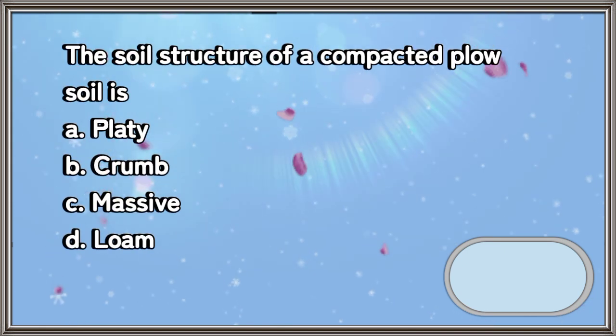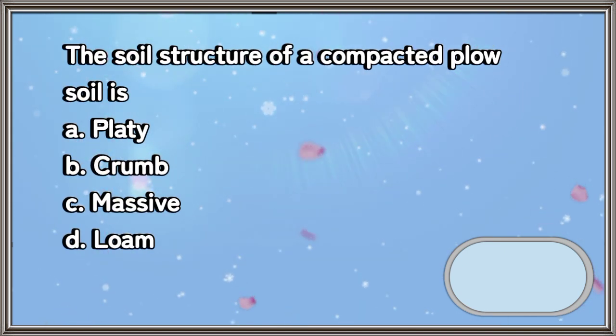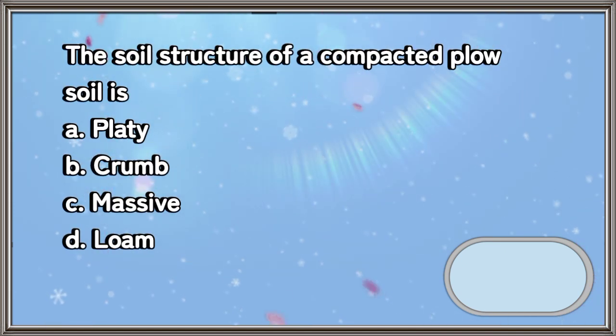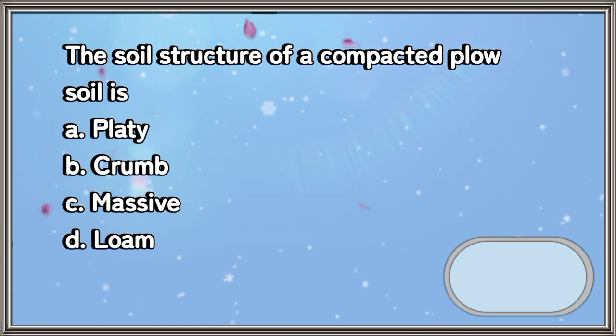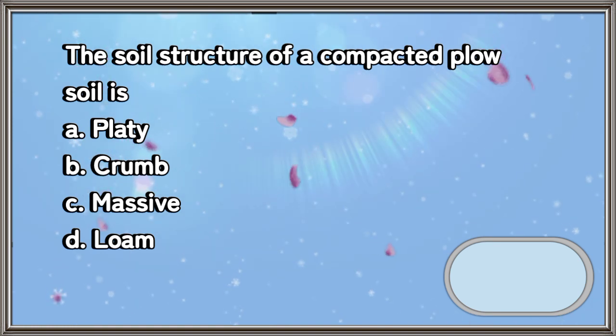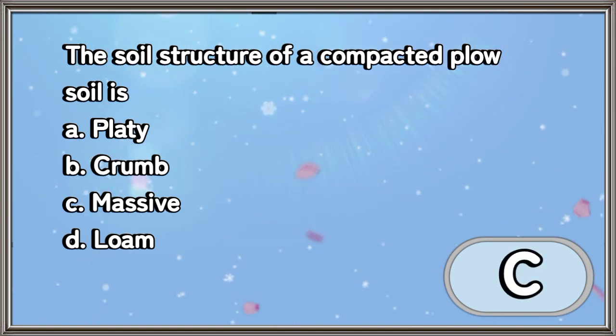The soil structure of a compacted plow soil is: A. Platy, B. Crumb, C. Massive, D. Loam. The answer is letter C.